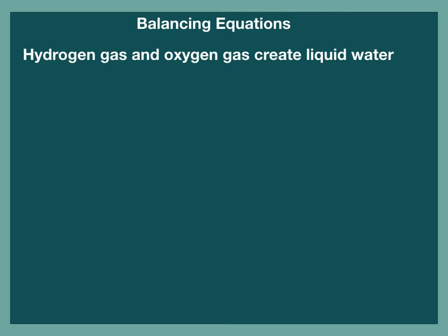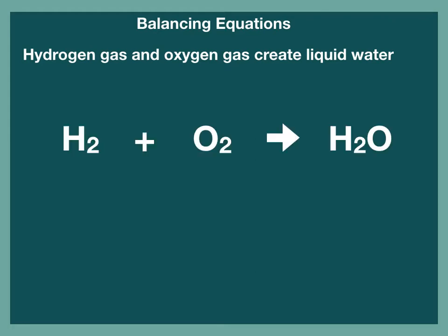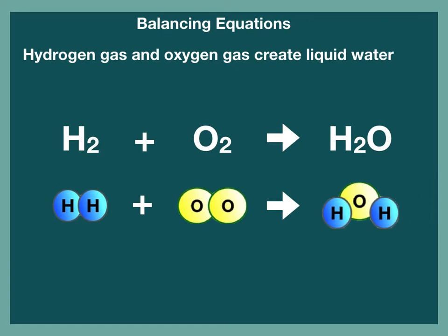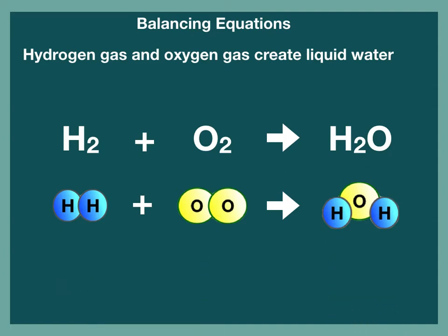Let's try one more. Hydrogen gas and oxygen gas create liquid water. This is the written version of this reaction. Now let's see what it looks like visually. Is this equation balanced? Although hydrogen is equal on both sides, oxygen is not. To balance this, we can just add another oxygen on the right side, right? No — adding another oxygen would change the compound from water to hydrogen peroxide. These are two different compounds with different properties, so we can't just add another oxygen.